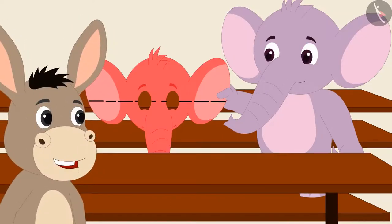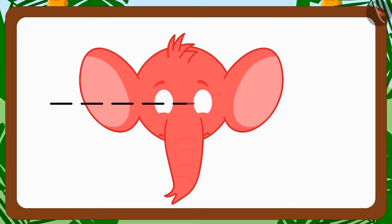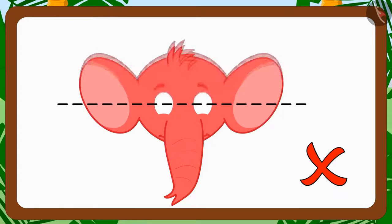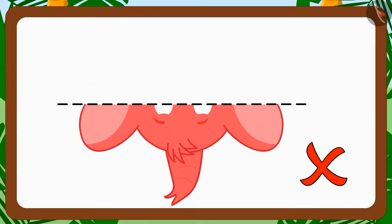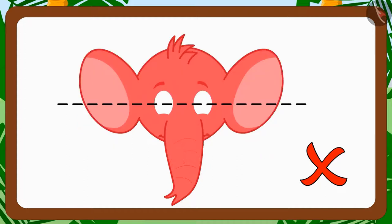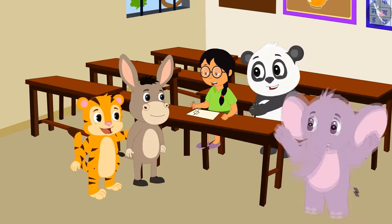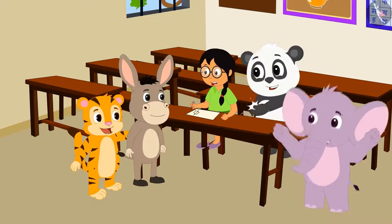Bhola replies: This is very easy. If you want to know whether a dotted line can divide an image into two similar parts or not, then just fold the image along the dotted line. If both parts coincide, then the line is dividing the image into two similar parts. This is the reason your line is not dividing your mask into two similar parts. All the children are impressed by Bhola's intelligence and promise not to call him a donkey ever again.